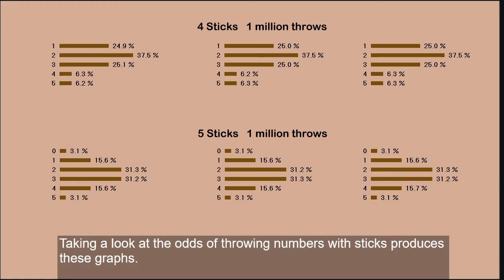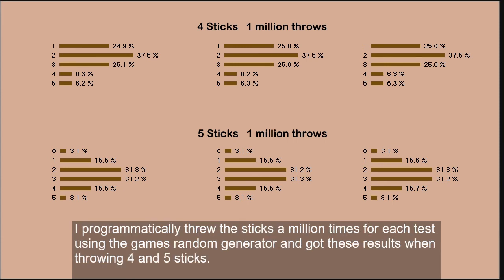Throwing the sticks produces these graphs. The sticks were programmatically thrown a million times for each test using the game's random generator, and these results were obtained when throwing four and five sticks.